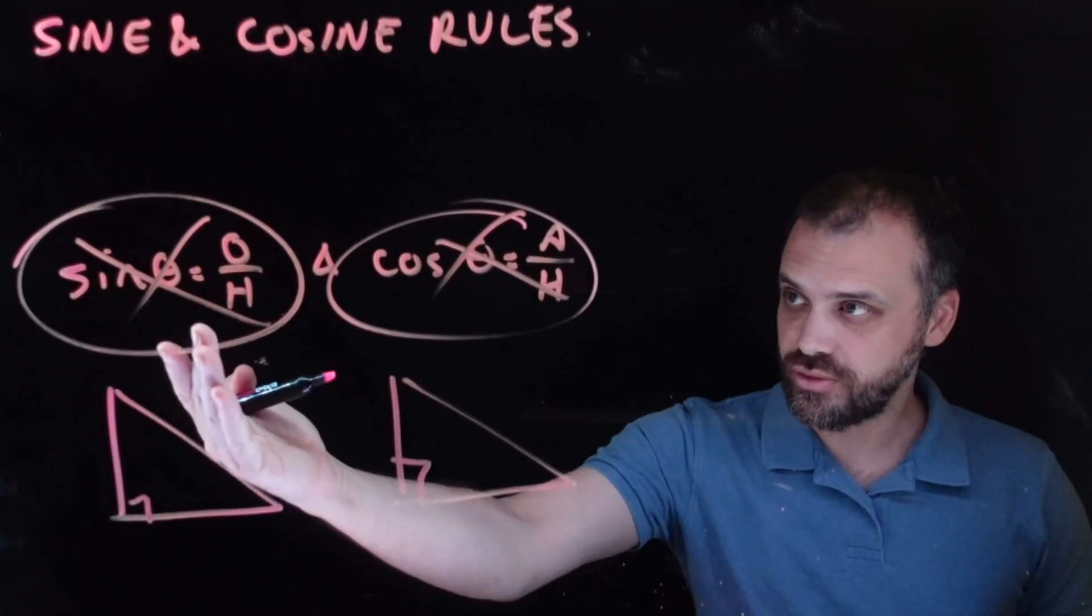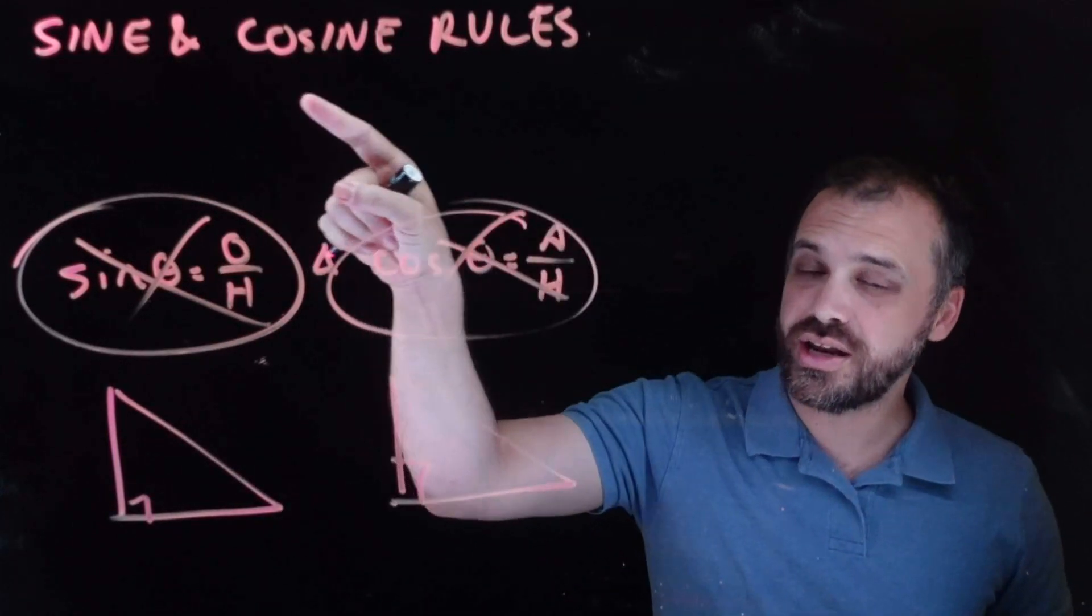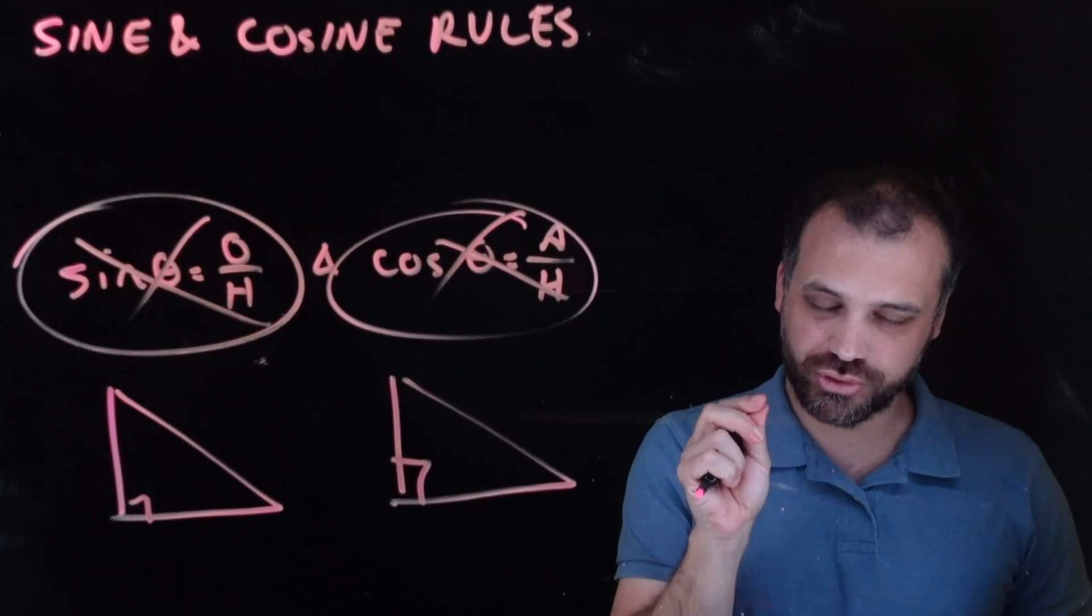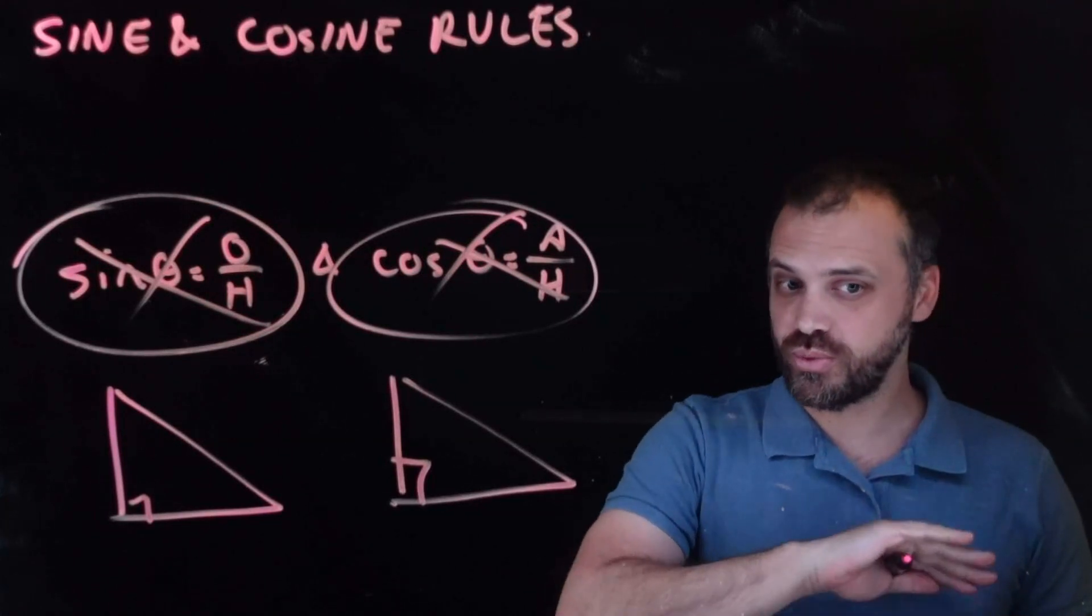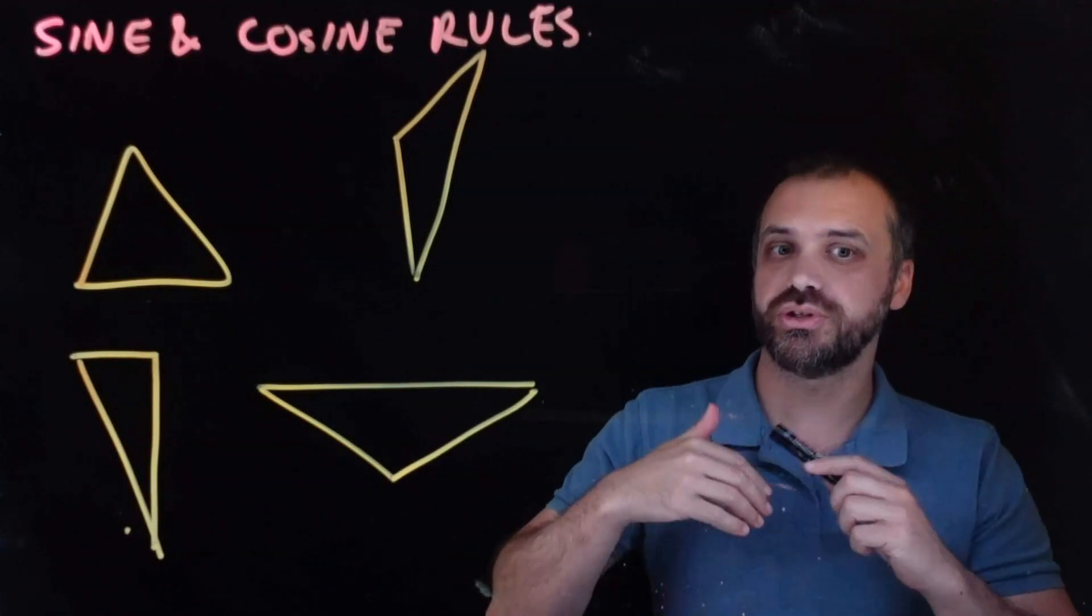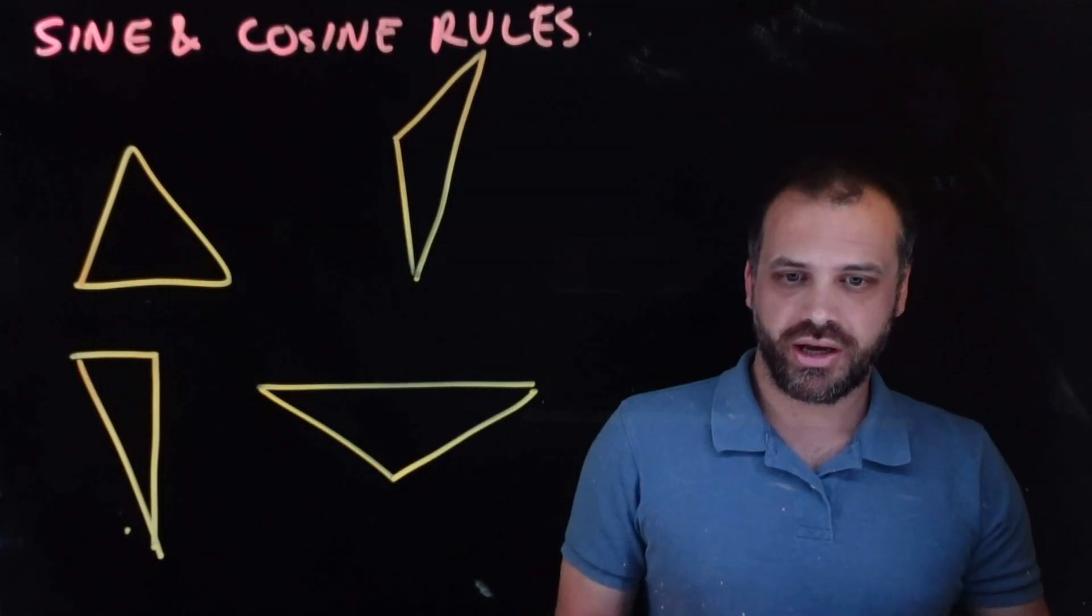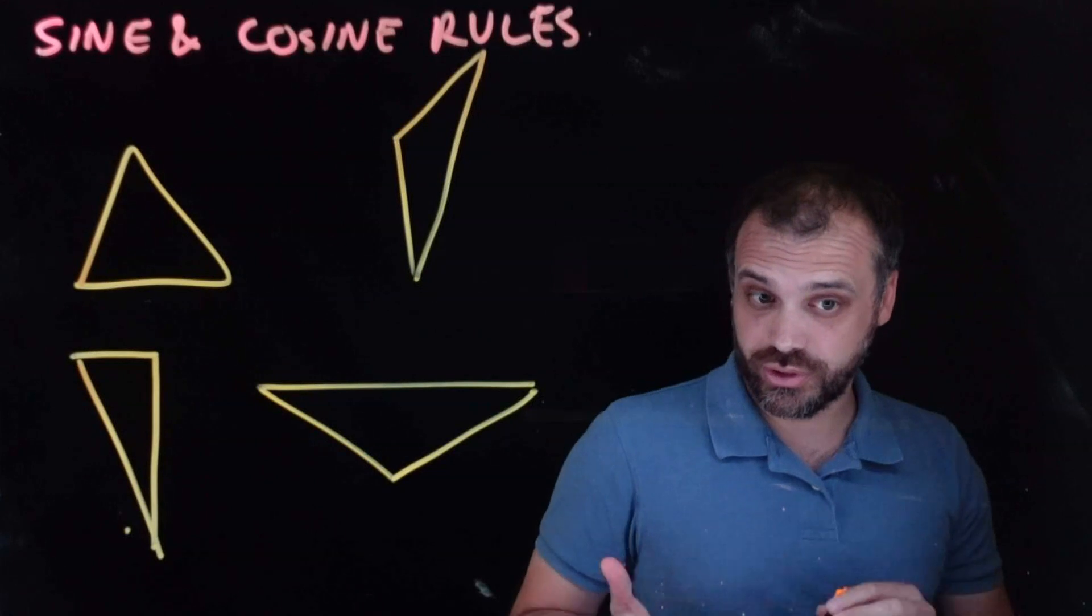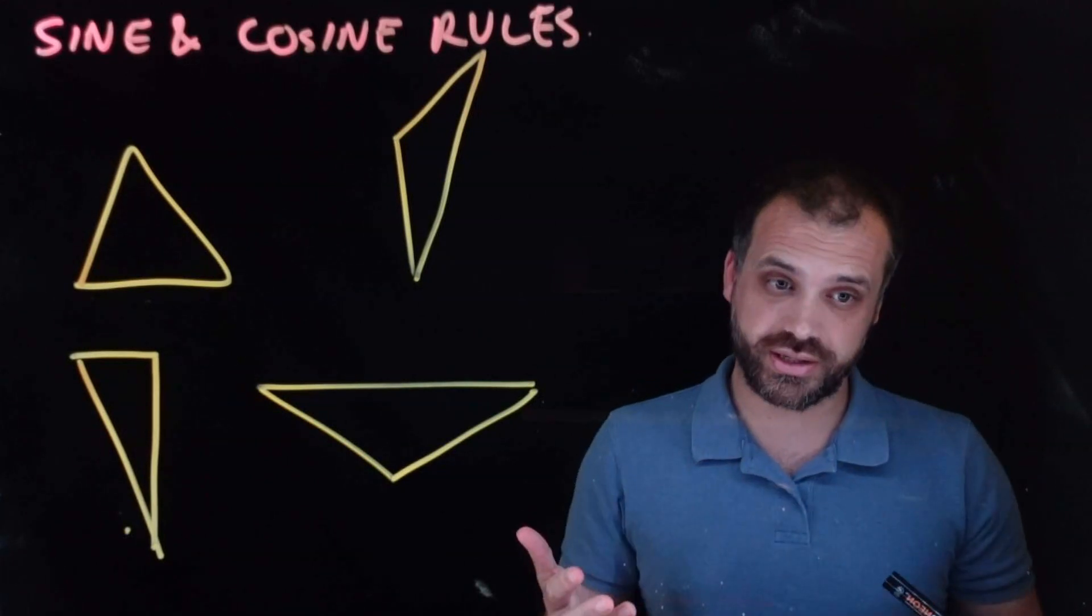Right angle triangles, these formulas. The sine and cosine rules, the rules we're going to be learning, work with any kind of triangle. Any of these triangles will work with the sine and cosine rules. Okay, so that's why we're learning the sine and cosine rules. That's why they're so awesome.